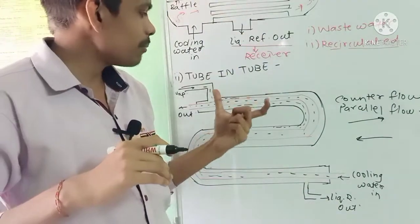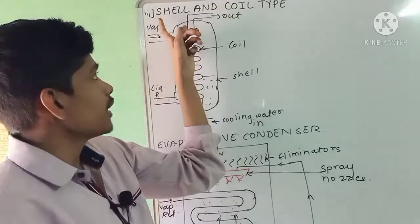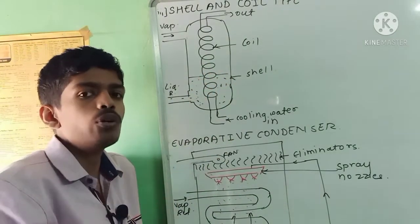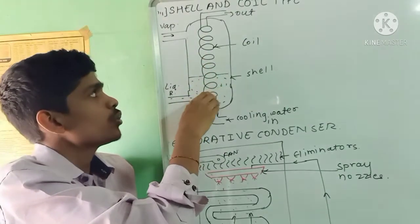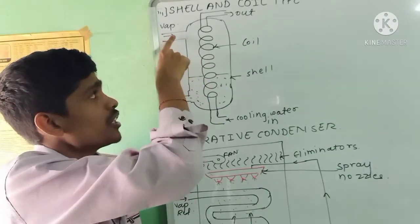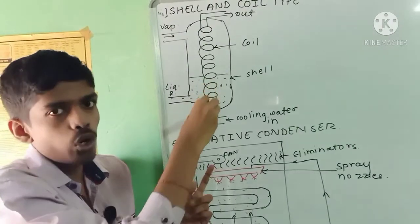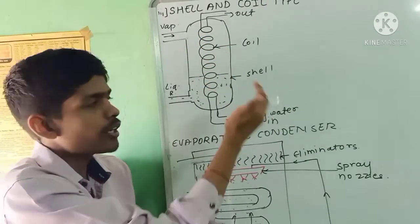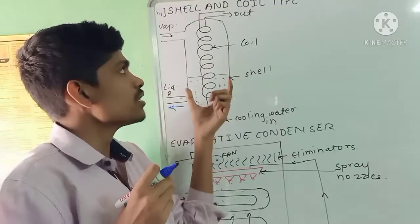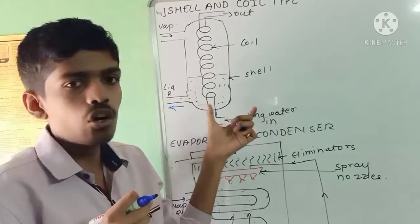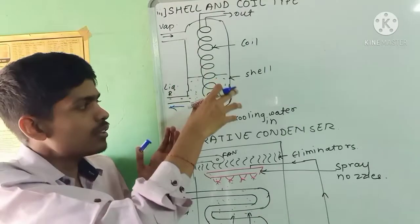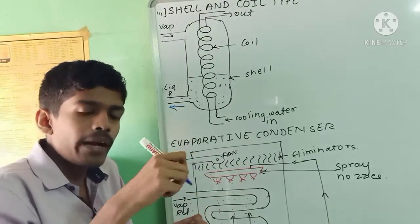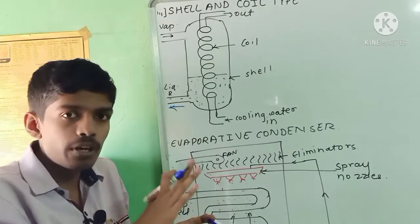The third type is the shell and coil type water-cooled condenser. It consists of a shell in which two or more coils are arranged. Cooling water flows through the coils, and vapor refrigerant enters from the top and flows over the coils. Heat transfer takes place, the vapor refrigerant gets cooled and converted into liquid refrigerant, which is sent to the receiver. These condensers can be vertical or horizontal. Since the coil is inside the shell, mechanical cleaning is not possible, but chemical cleaning can be done. The counter flow system is generally preferred here as it is more efficient.